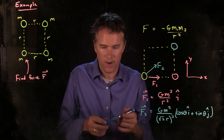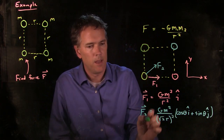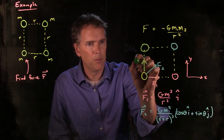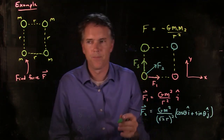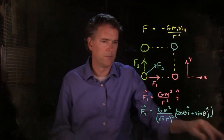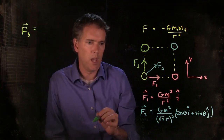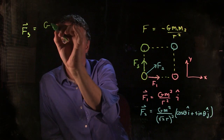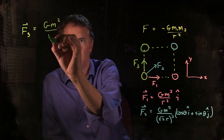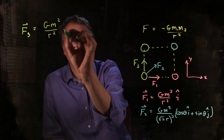There's one final force due to this guy right there — supposed to be green, but it looks a little more yellow. That causes a force going up, which is F3. F3 is G M squared divided by how far away it is squared, which is just R squared. And that is all vertical, so we put j-hat on it.